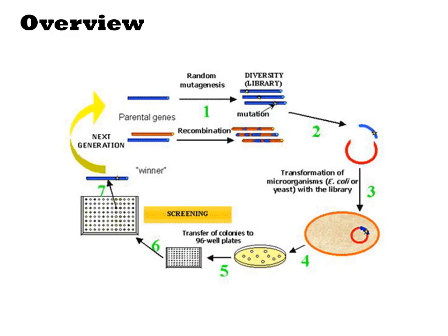There are two common techniques for generating diversity: random mutagenesis or recombination of parental genes. These procedures typically involve PCR, and then you subclone the library into a vector and transform your cells.